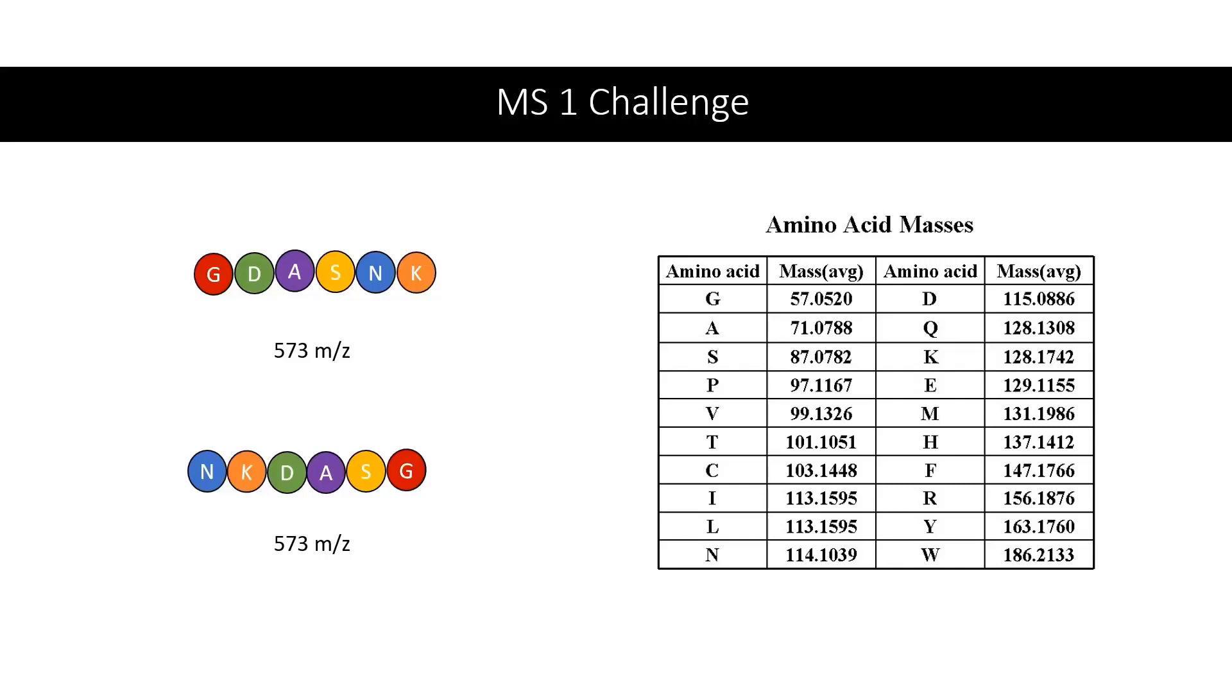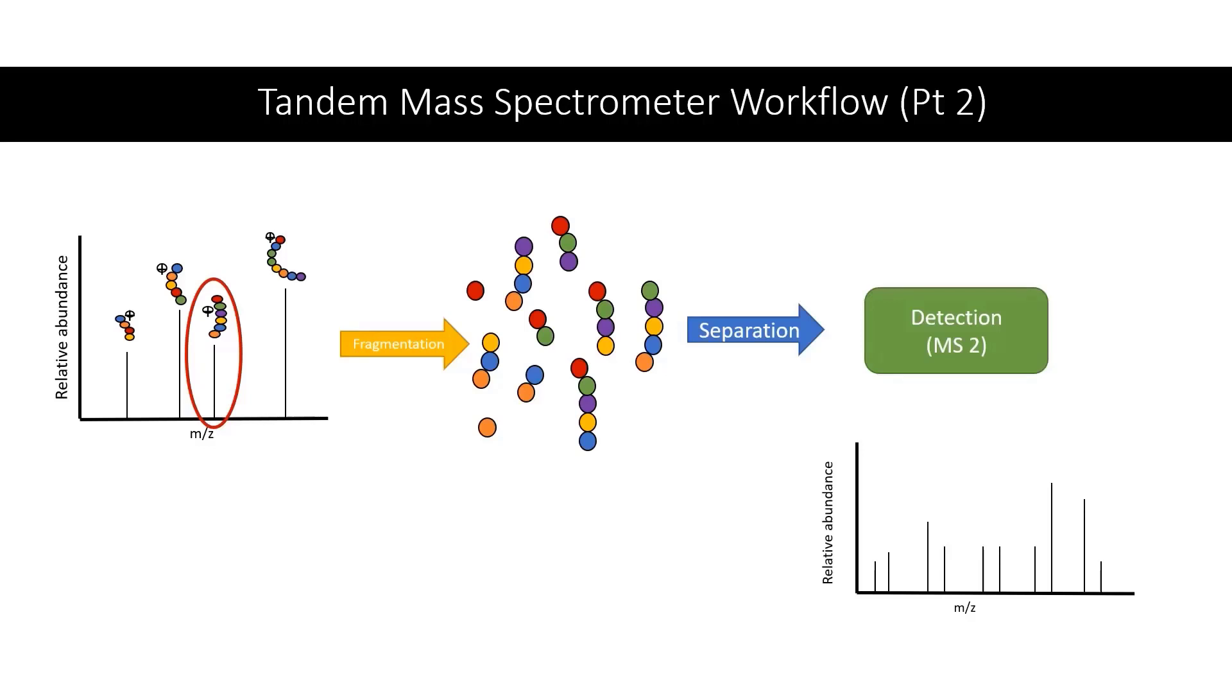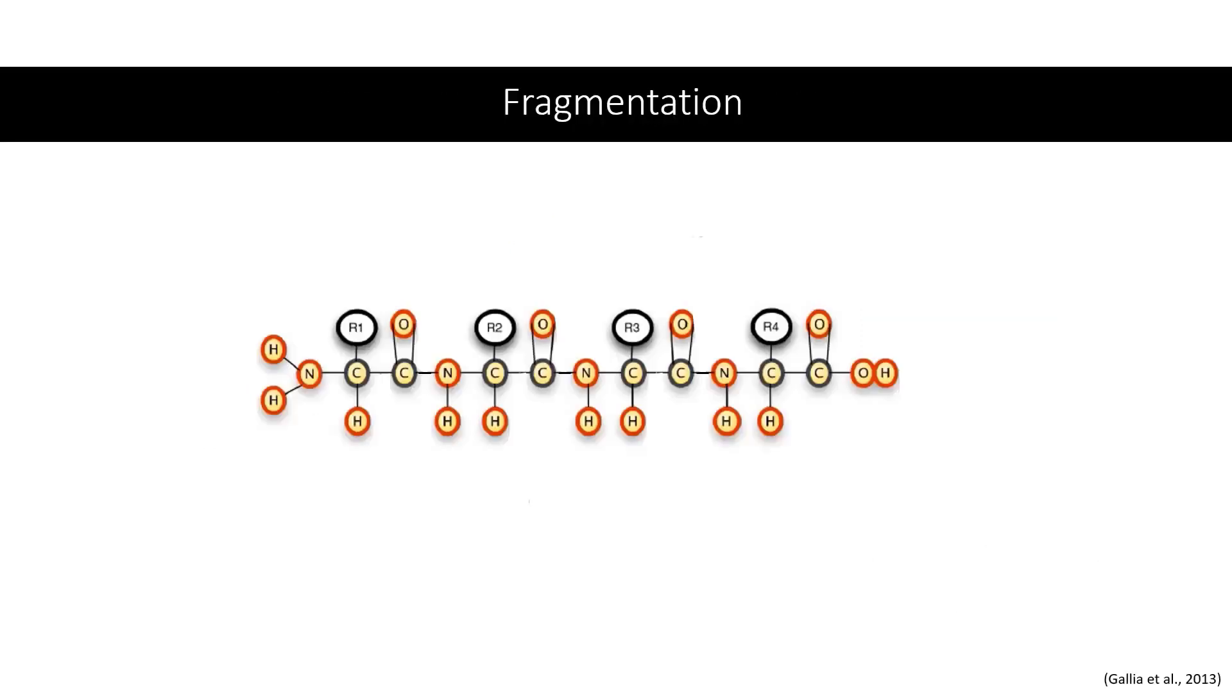We can program our mass spectrometer to run further analyzation of peaks of interest and create a mass spectra of the corresponding peptide. This peptide first goes through fragmentation. This process further breaks down the peptides by breaking them at their peptide bonds. We will discuss this further in a moment. After fragmentation, it once again goes through separation and detection resulting in the MS2 spectra.